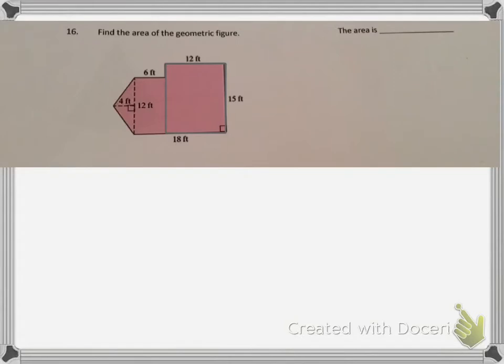We have one gray rectangle that's 12 feet by 15 feet. We have a blue rectangle that's 6 feet by 12 feet, and we have a triangle. Let's label the rectangles.